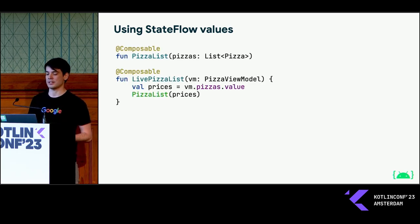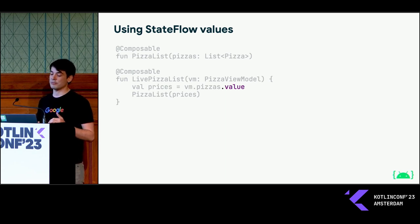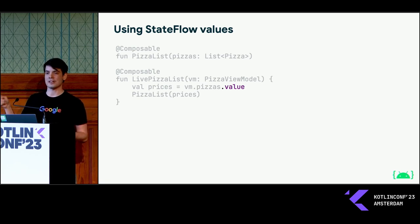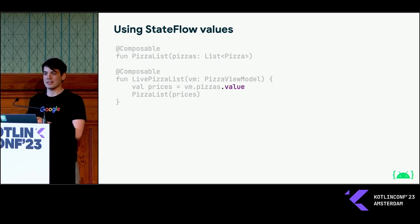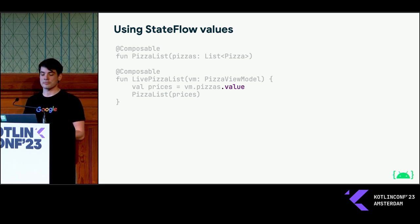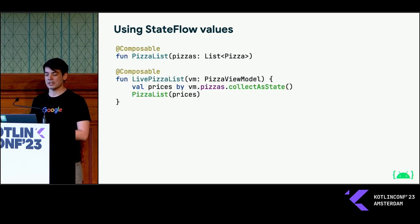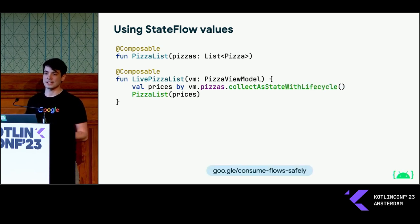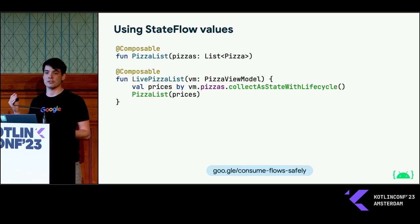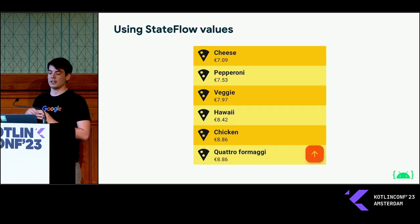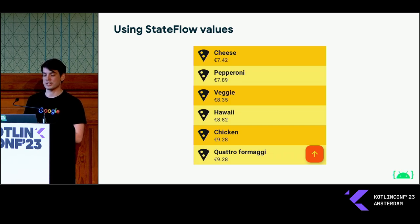The error here is that we are reading the value of a StateFlow directly. The StateFlow will have new values over time, but Compose has no idea when that happens because the StateFlow is not connected to Compose in any way. Compose can only detect changes and trigger recompositions based on Compose state objects. So we need to convert the StateFlow into Compose state first by calling collectAsState. And if you're on Android, you should really use collectAsStateWithLifecycle instead — which is now stable — making sure you're doing things in a lifecycle-aware way and not wasting resources when your app is in the background. With these changes, we can now see a wonderful list of pizzas with dynamic pricing.